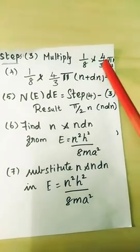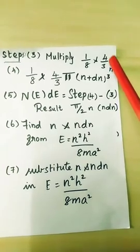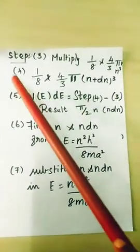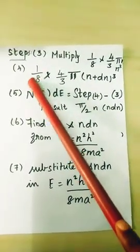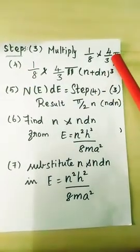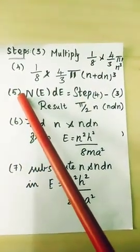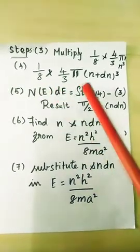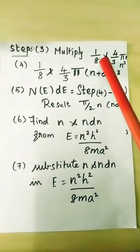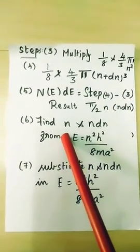Step 3: multiply the octant of the sphere (1/8) into the volume of the sphere (4/3 π N³). Similarly we have to write 1/8 multiplied with the outer radius (N plus dN) and then the inner radius N. Step 4: find N(E)dE — that means outer radius portion minus inner radius portion — which results in π/2 × N × dN.